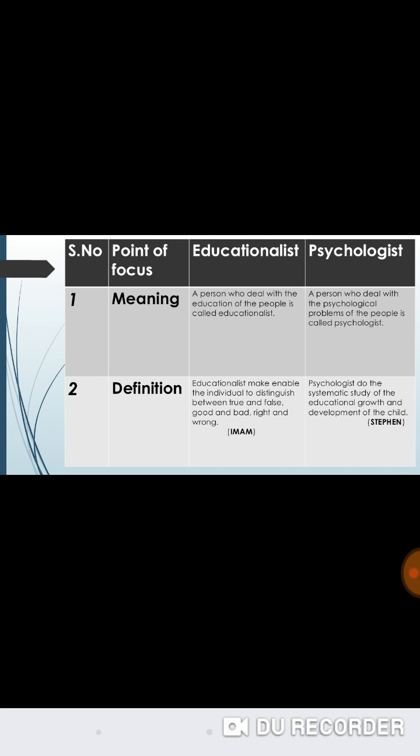An educationalist is a person who deals with the education of people. A psychologist is a person who deals with the psychological problems of people. An educationalist may enable the individual to distinguish between true and false, good and bad, right and wrong. A psychologist does the systematic study of the educational growth and development of the child.